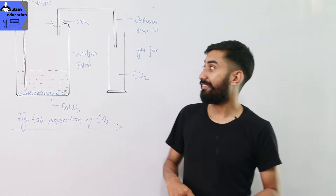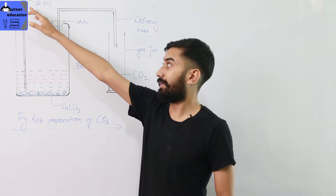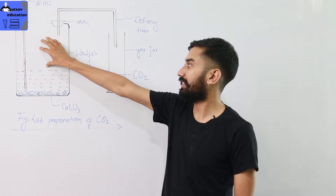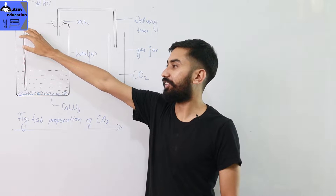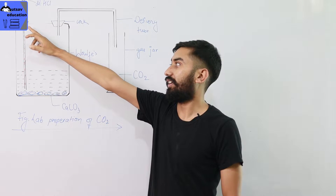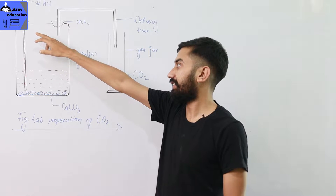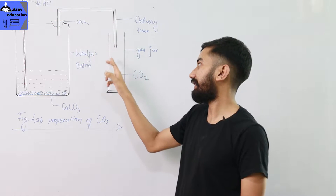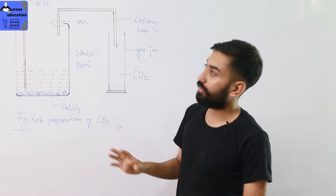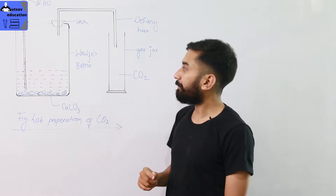This is the first thing — I will explain the lab apparatus. We will have the thistle funnel. There is a Woulff bottle with an inlet and outlet opening. This is also a delivery tube. This is where the gas will be collected. This is the lab preparation.